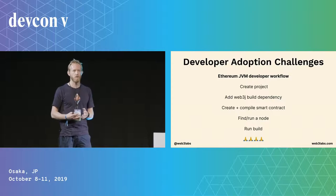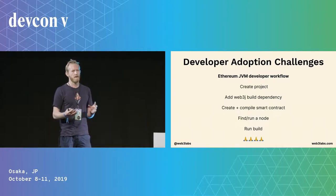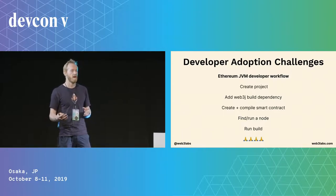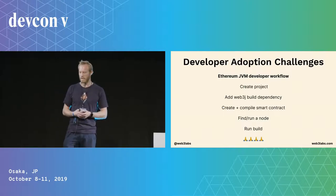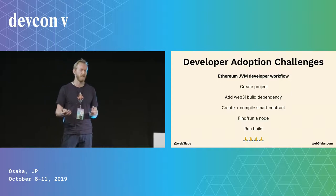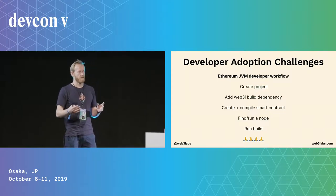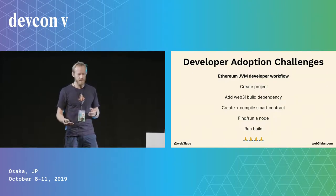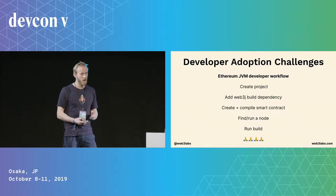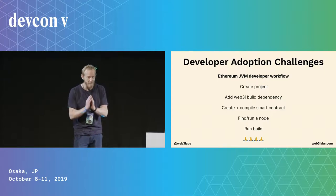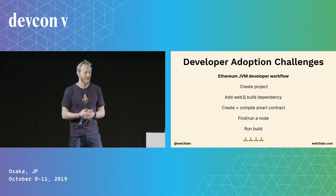Why do we have Web3J? It's there for developers on a certain platform working with Ethereum. Historically it's been a dependency people pull into their projects, but there are challenges with that. For developers new to Ethereum and blockchain, the journey looks something like this: create a project, add a build dependency pulling in Web3J, write smart contract code, compile it, find a node to run against, run the build, and pray it all works.